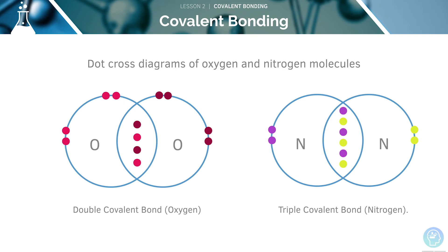Here we can see our double covalent bond example, which is oxygen, and our triple covalent bond example, which is nitrogen.